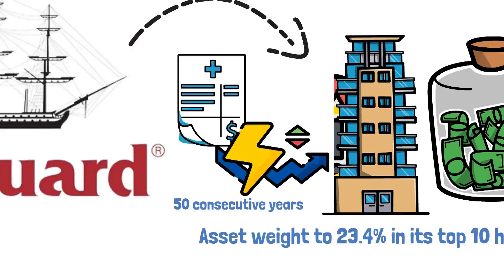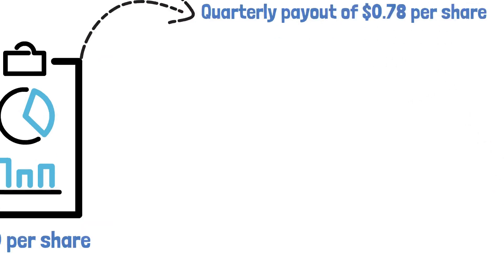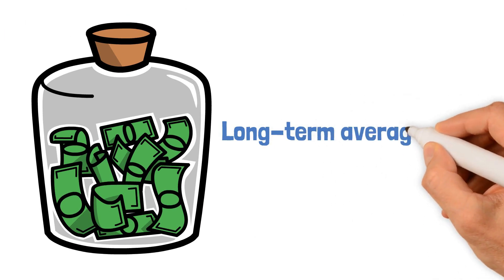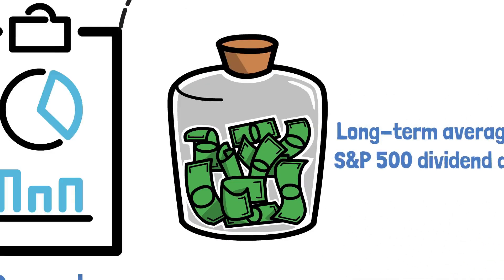Currently, the ETF boasts an annual dividend of $3.10 per share, translating to an average quarterly payout of $0.78 per share. It's an attractive dividend yield of 2.79%, surpasses the S&P 500's 1.3%, and even exceeds the long-term average of the S&P 500 dividend at 1.86%.